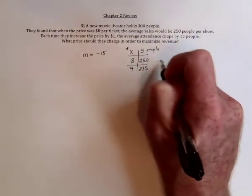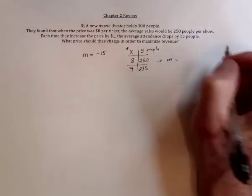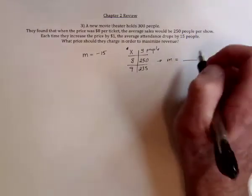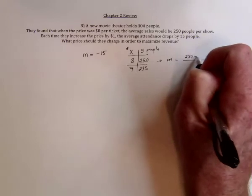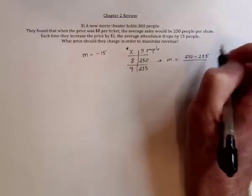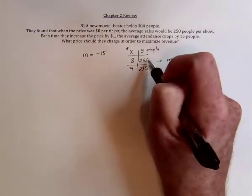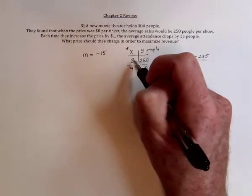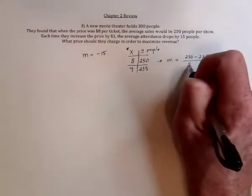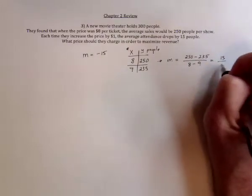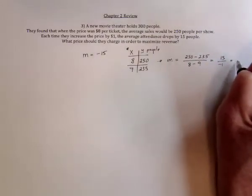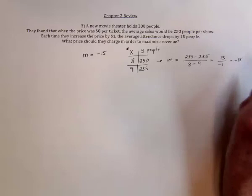From this information, you could find the slope. So it's going to be 250 minus 235. I subtracted from the top, subtract the bottom, so I need to do the same thing here at the top, subtract the bottom. And so it's going to be 15 over negative 1, or negative 15 for the slope.